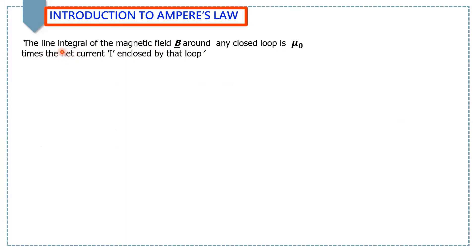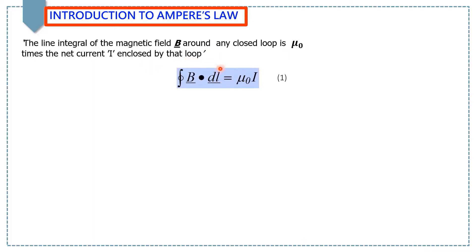According to Ampere's law, the line integral of the magnetic field around any closed loop is mu naught times the net current enclosed by that loop. Mathematically, we can write: closed integral B dot dL is equal to mu naught I, where I is the current enclosed by the loop, dL is a segment of that loop, and B is the magnetic field around that closed loop.